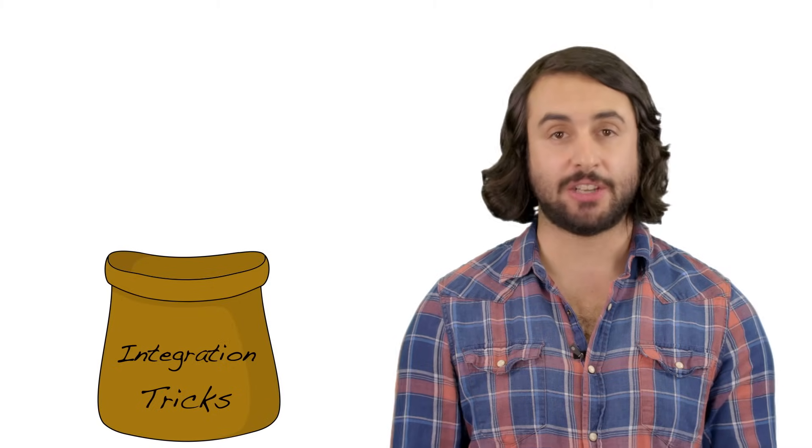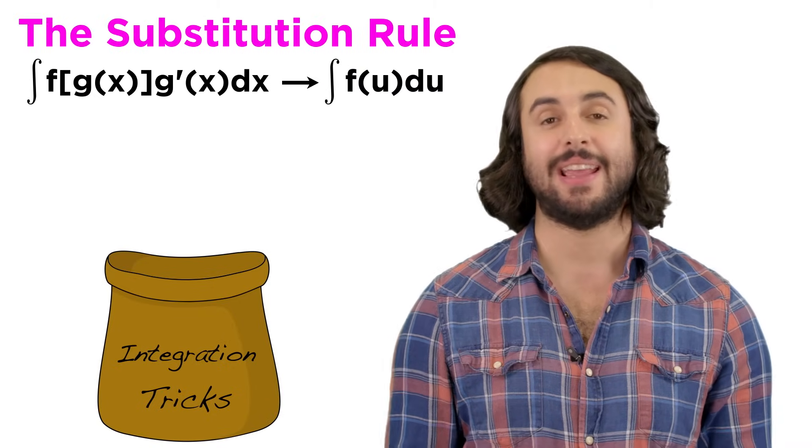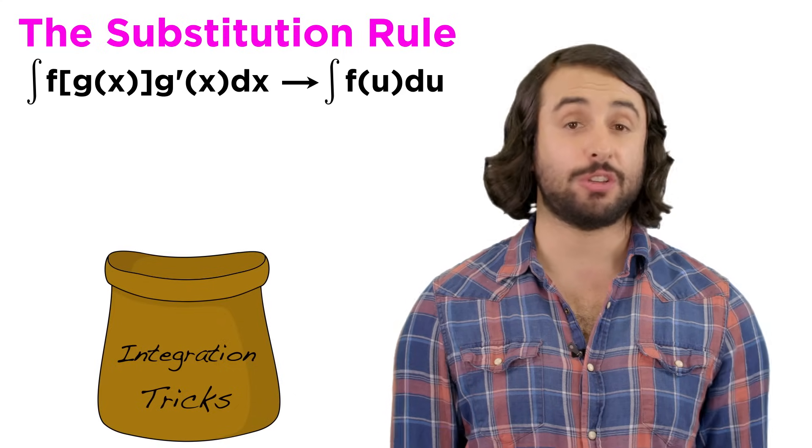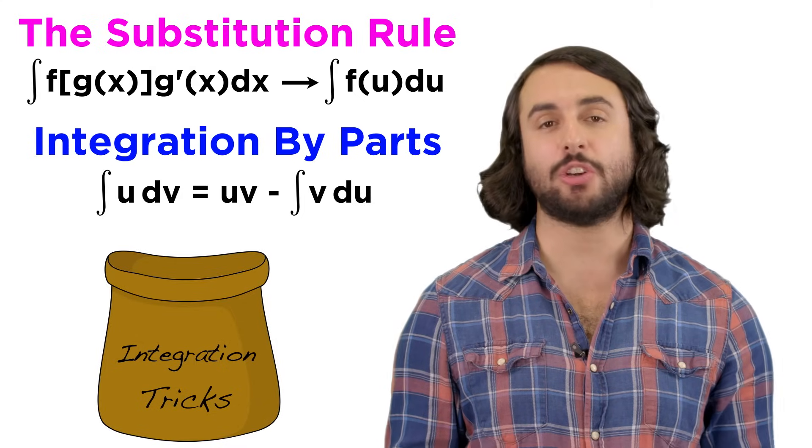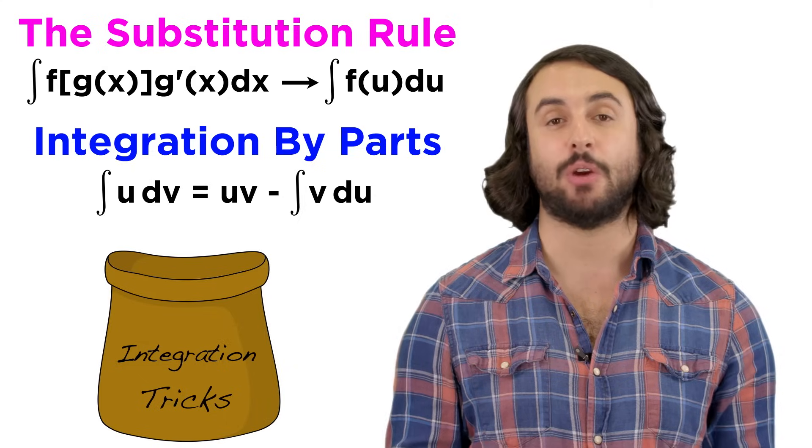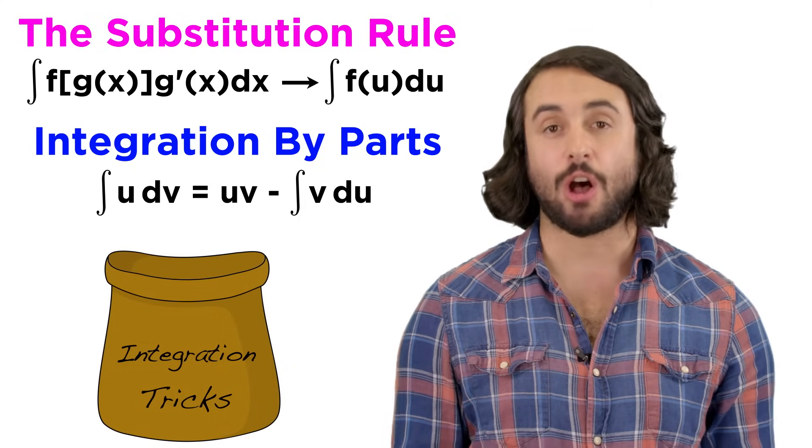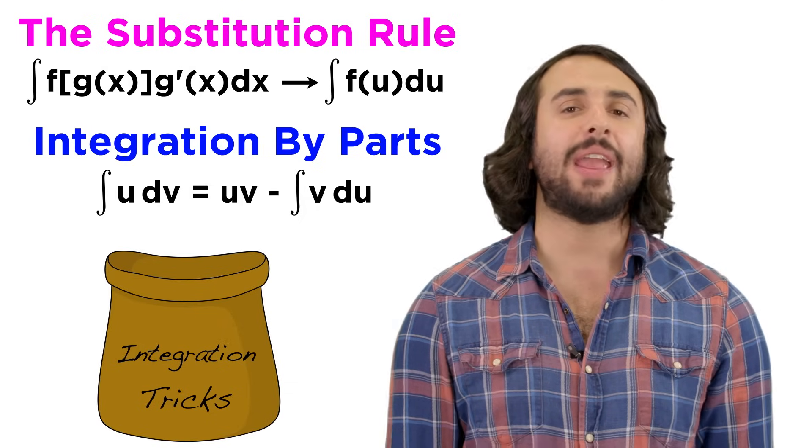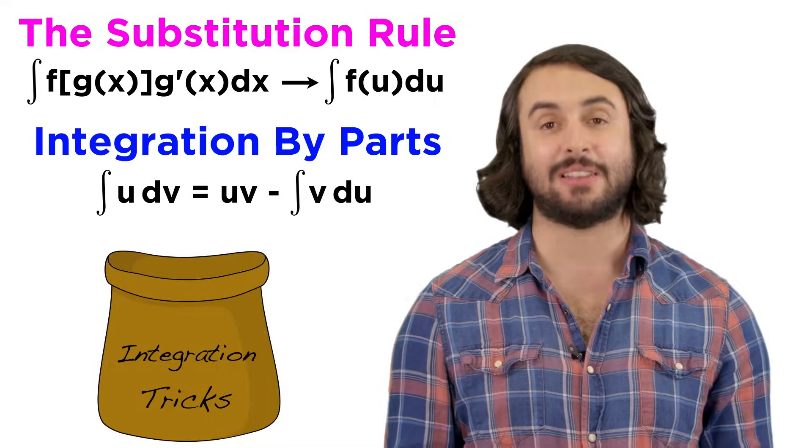So integration by parts is just another technique in our bag of tricks that we can use to evaluate integrals. The substitution rule works well when the integrand is the product of a function and its derivative, or close to it. Integration by parts works when the two functions are not related at all, but one of them becomes much simpler when differentiated, which makes the new integral easier to solve than the original one. We have one more trick to learn regarding integration, but before we move on to that, let's check comprehension.